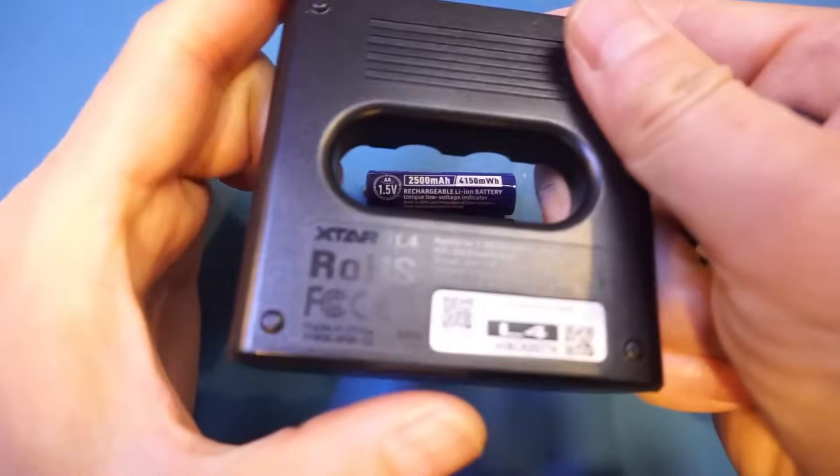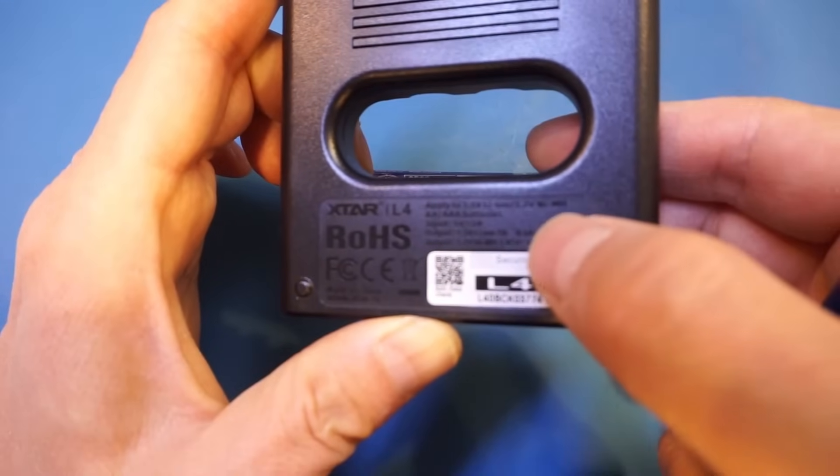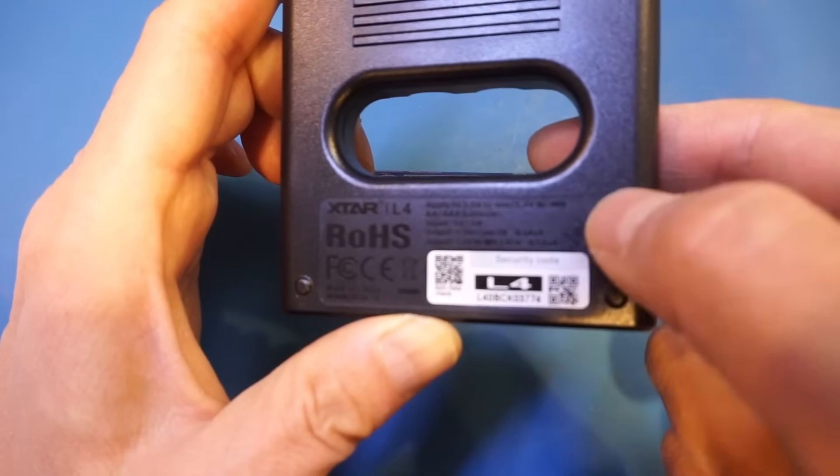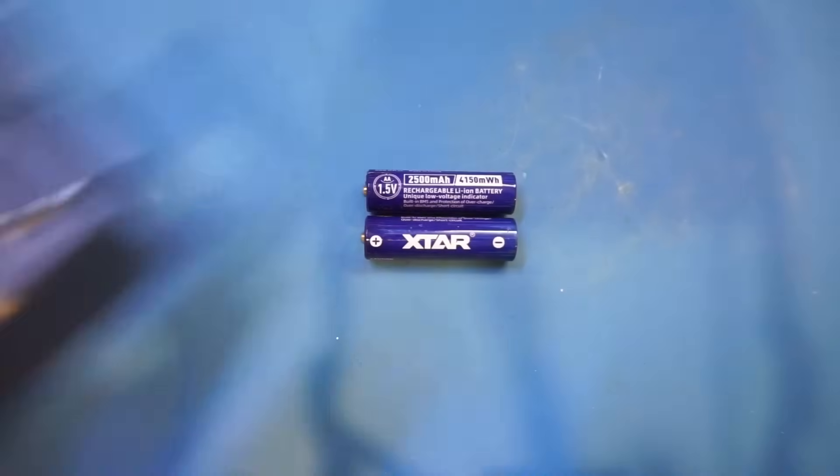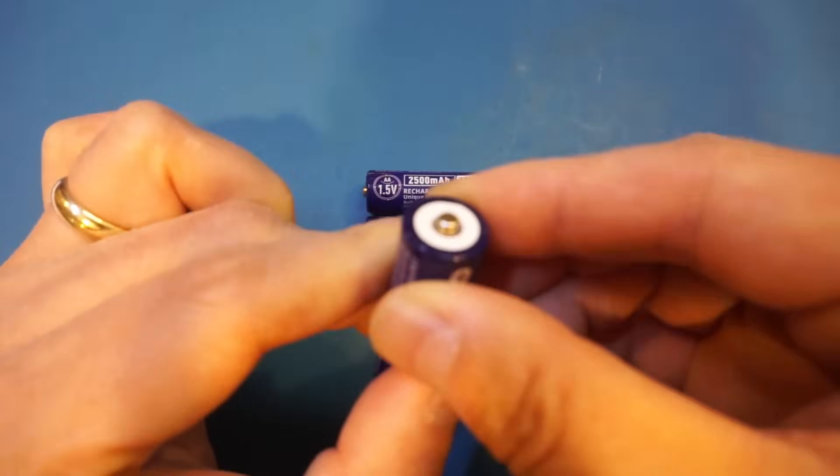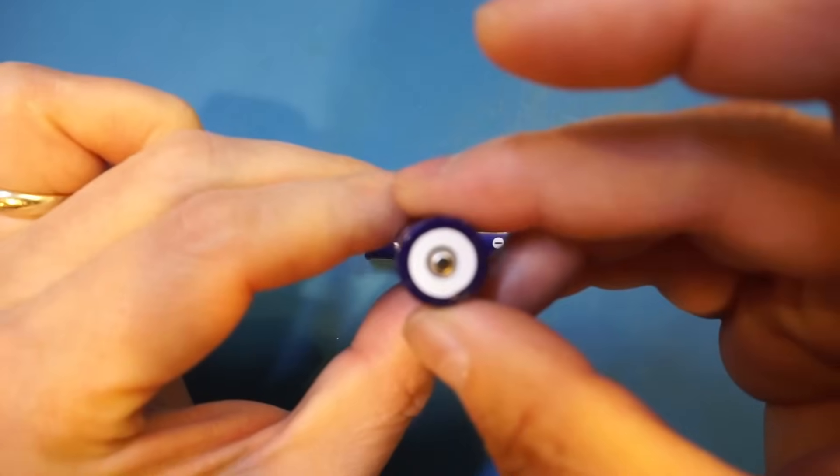As you can see here, it says it's compatible with both 1.5 volt lithium-ion and nickel metal hydride batteries. I just wanted to show you the positive terminal of the battery. Again, you can see that we have this tip, and then the ring is actually insulated. So there is no separate battery terminal on top.